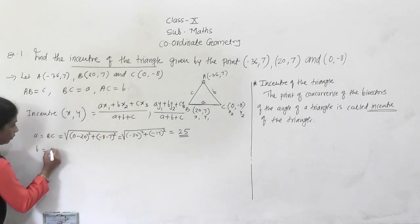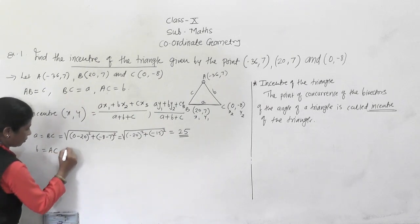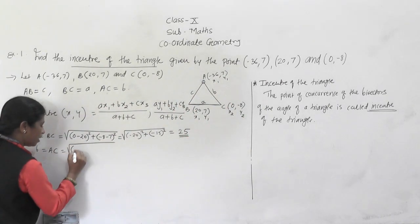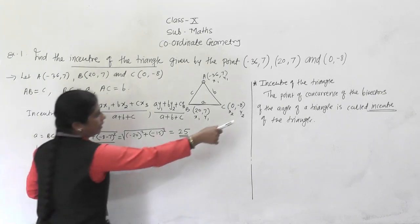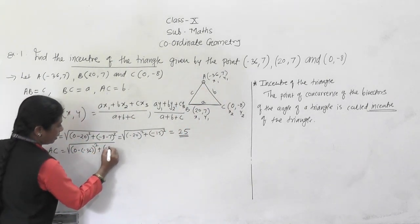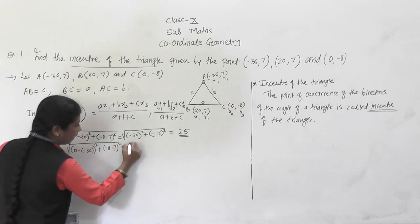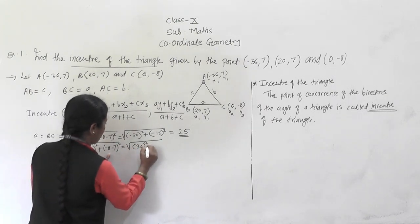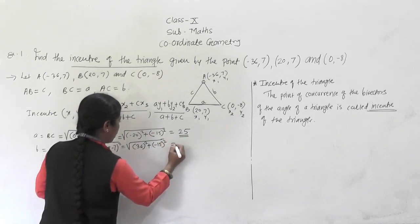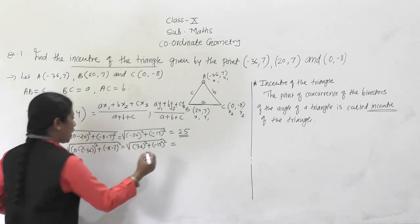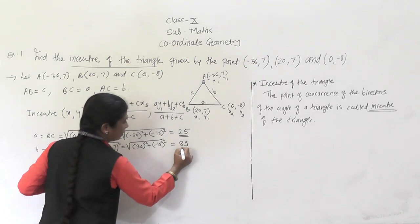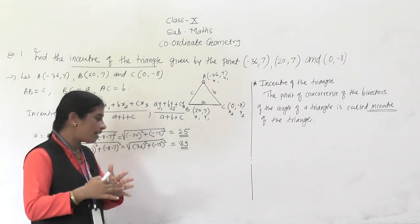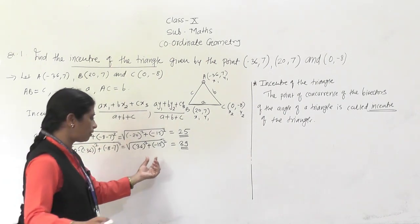Next, b = AC. AC = √[(0 − (−36))² + (−8 − 7)²] = √[36² + (−15)²]. After finding the squares of 36 and 15, adding them, and taking the square root, you get b = 39.